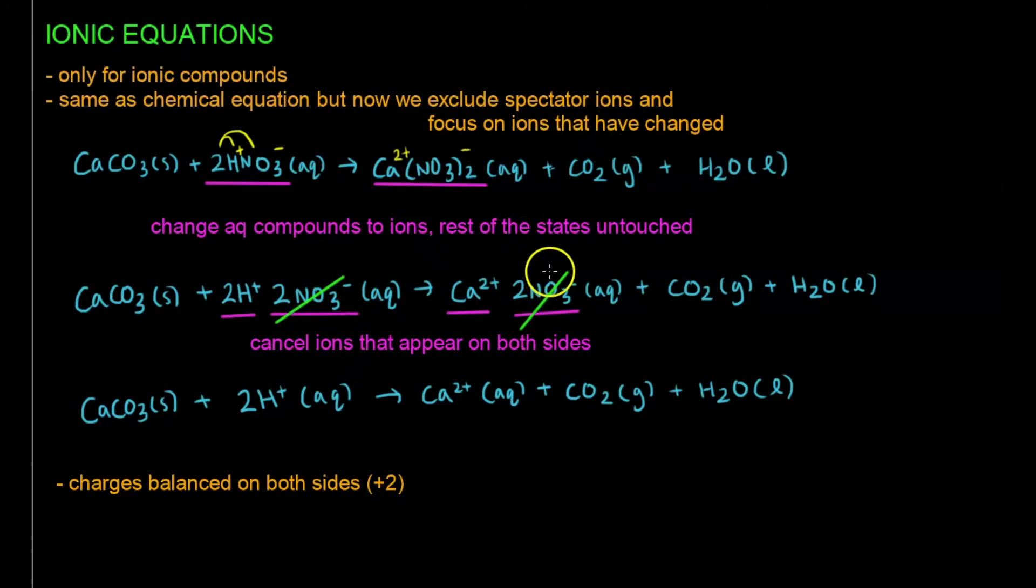So once I've cancelled out the ions that are spectators, I rewrite my equation such that I ignore them. And now what I have is CaCO3 solid plus 2H plus aqueous, and Ca2 plus aqueous, giving us CO2 and H2O, just copy down.